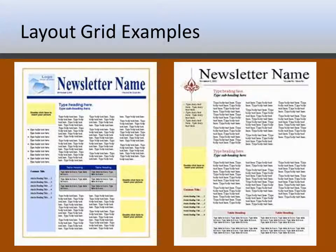Just a couple of other examples to show you — these are still four-column layouts. Even though the left column is being used for table of contents and other information, the stories are in the center and right columns. You can split this up any way you want. But again, just more examples to show you how with a layout grid, your eye is immediately drawn to certain things and it's easy to move from one element to another — which is the whole purpose of the layout grid.